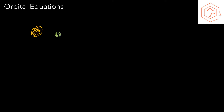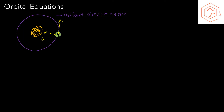Now that we have an equation for the gravitational force, we can try to describe orbits. Let's imagine that we have a mass sitting in space — this could be a planet — with another object orbiting it. We'll assume that the orbit follows uniform circular motion, which gives us a constant speed tangent to the circle at all points, and a constant centripetal acceleration provided by the gravitational force.